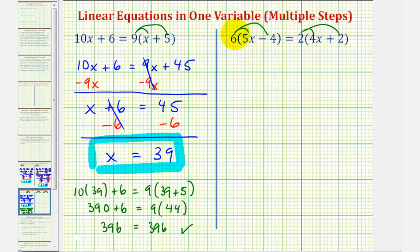So 6 times 5x is 30x. 6 times negative 4 is negative 24, or minus 24. On the right side, 2 times 4x is equal to 8x, and 2 times 2 is equal to 4, so plus 4.